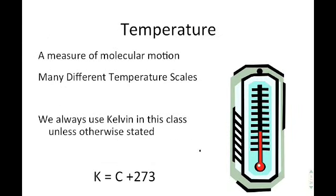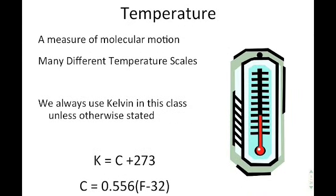Temperature is actually a measure of molecular motion. When a thermometer says it's so many degrees outside, what it's doing is indirectly measuring the average speed of the molecules in the room. There are a whole bunch of different temperature scales, but for the purposes of this class, we will use Kelvin or Celsius unless otherwise stated. We tend to stay away from Fahrenheit.